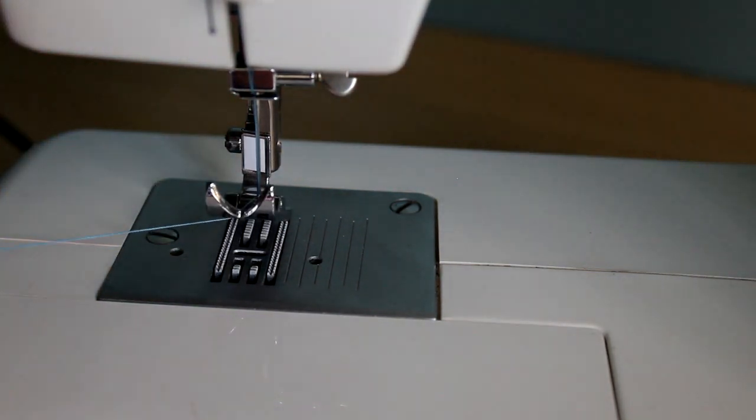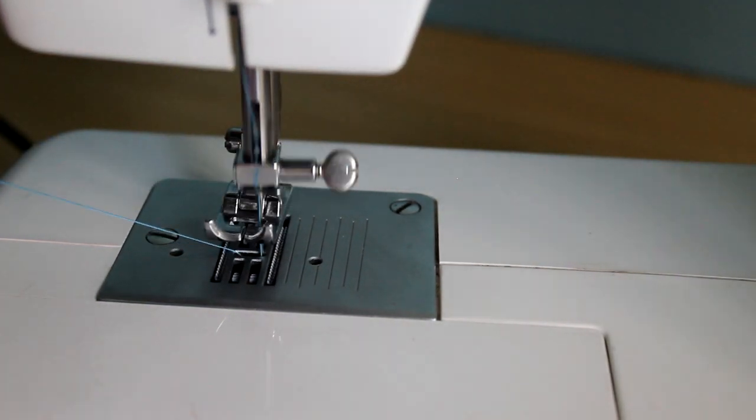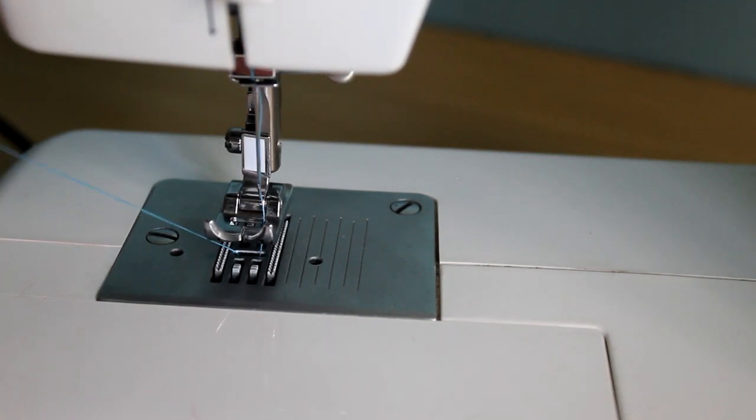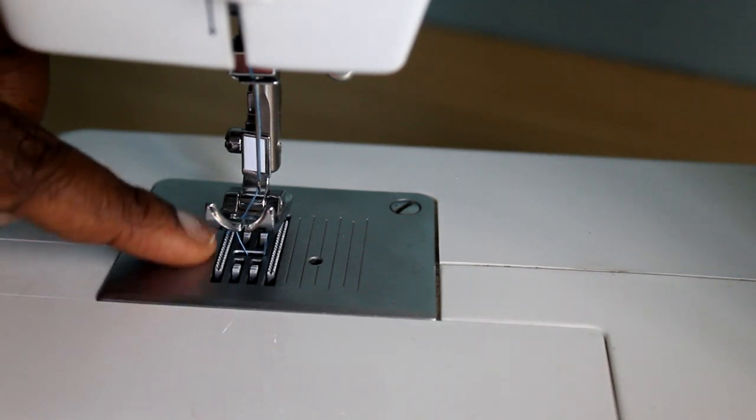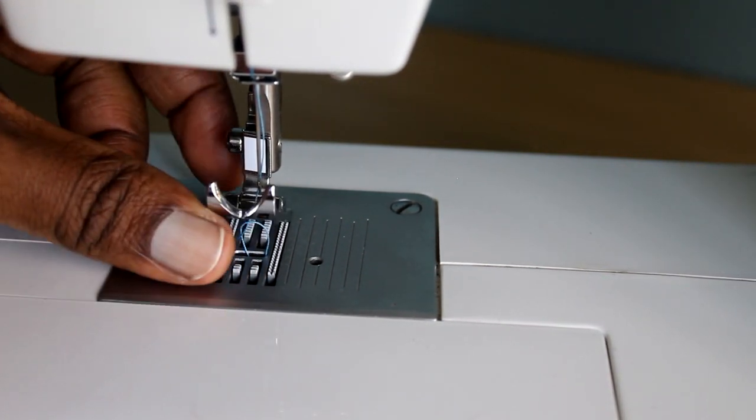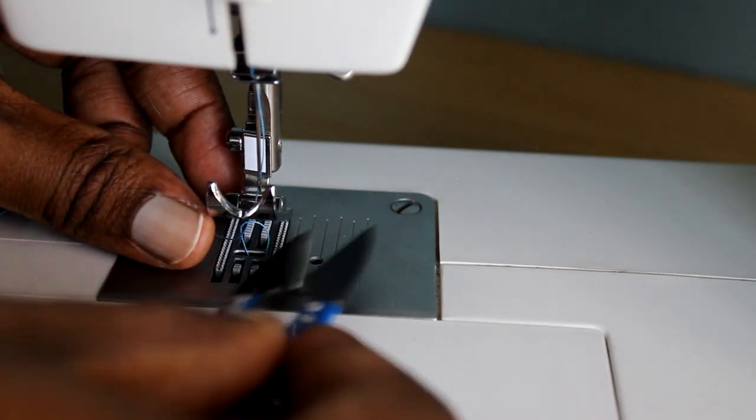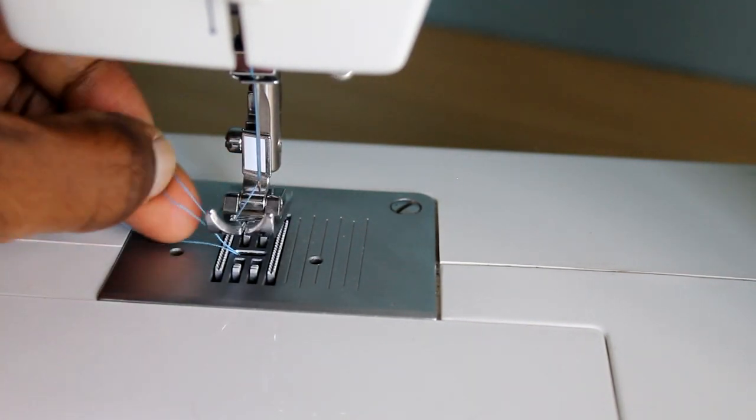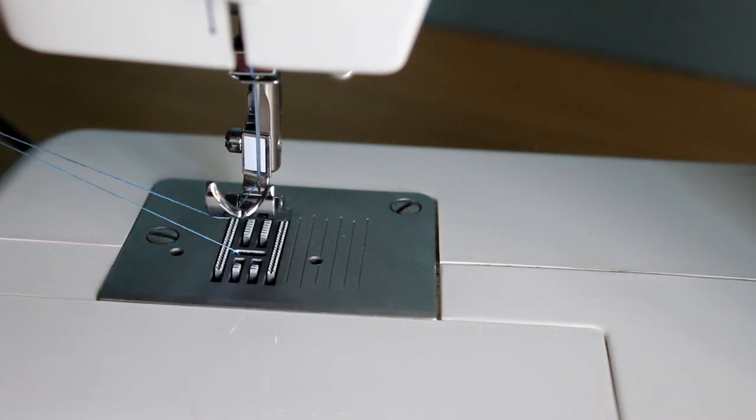What you do is hold the upper thread, roll the needle down, just turn the handwheel towards yourself so the needle goes down and comes back up, and it should come up with the bobbin thread as you can see underneath. You might have to do it twice, but most times you might get it the first time. Then you just pull it out and push it to the back and your machine is threaded and ready for use.